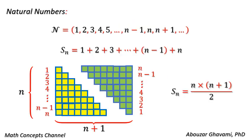Natural numbers is an arithmetic sequence with initial value 1 and common difference 1. The elements in natural numbers are 1, 2, 3, 4, 5, up to n-1, n, n-1, and so on.